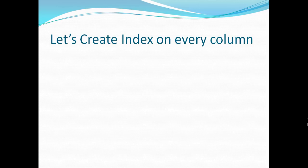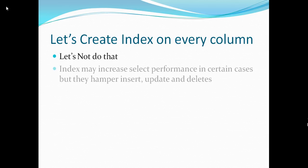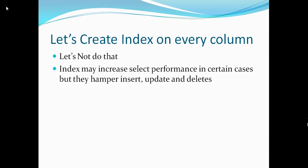We just saw how effective indexes are — instead of retrieving data from millions of rows, we went ahead with a particular row ID and retrieved the data. So why don't we create an index on every column? Well, indexes can improve select performance in certain cases, but when you are doing inserts, updates, or deletes, they actually hamper performance. You have to add data to your table and also maintain your index — since indexes are arranged in ascending order by default, inserting a row means inserting into the index too.